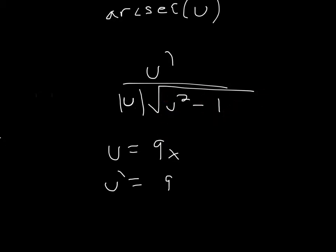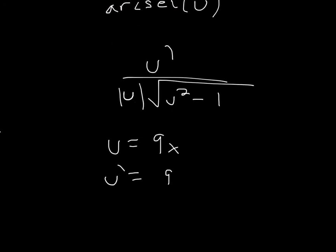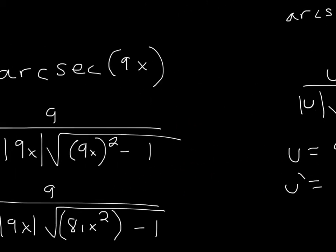So what is u? u is whatever is inside the parentheses, so here u is 9x. And what is u prime? That's 9 — all you're doing is getting rid of the x, so u prime is 9.